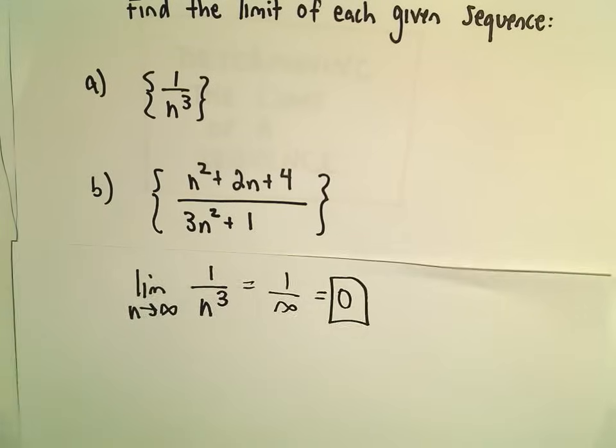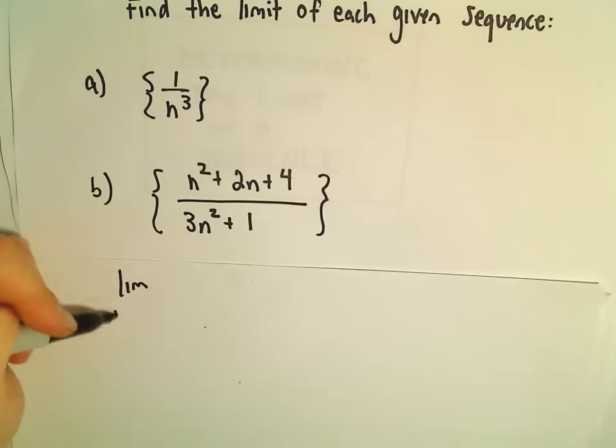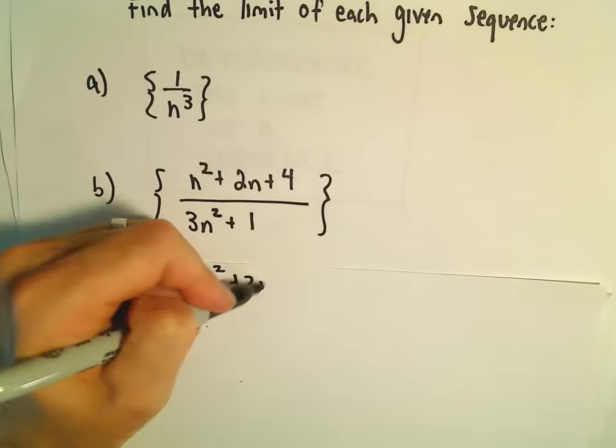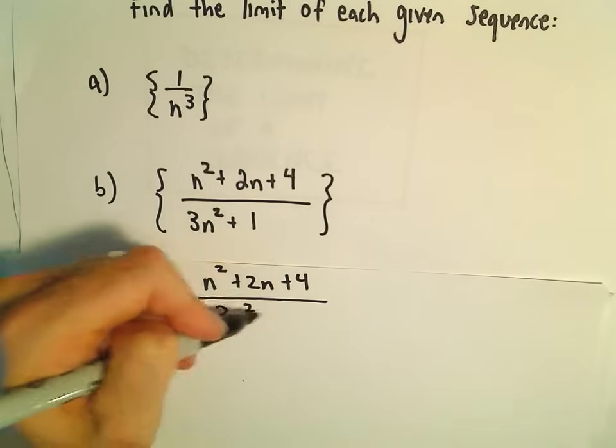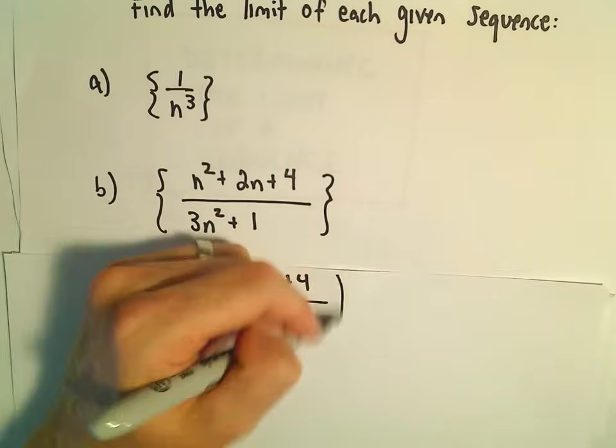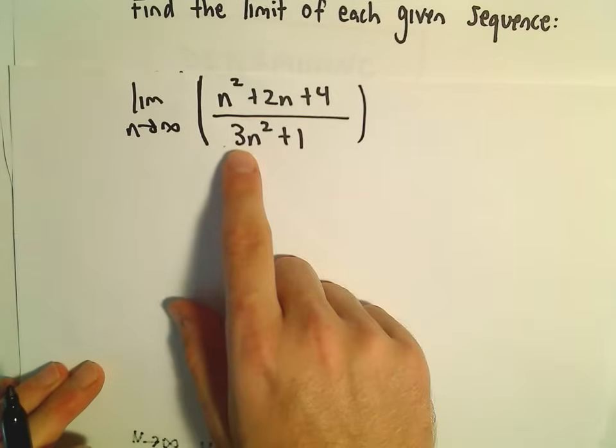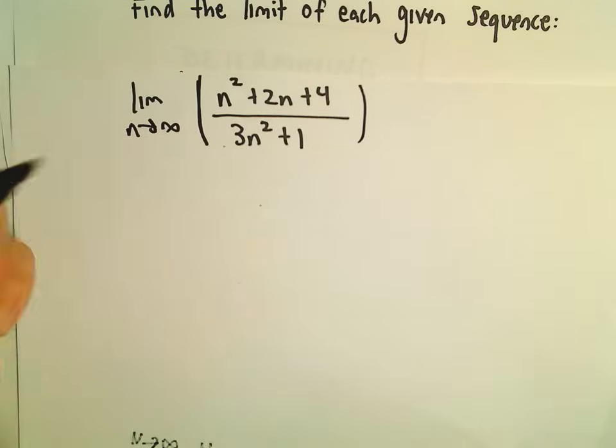Part B, same thing. We'll just take the limit as n goes to infinity. So recall the shortcut, if the degree of the numerator is equal to the degree of the denominator, we just do the ratio of the coefficients. So I can just simply look at this and say, this is 1n squared and 3n squared. The degree of the top equals the degree of the bottom. We'll get 1 third. It's a very useful little shortcut to remember when you do sequences and series.